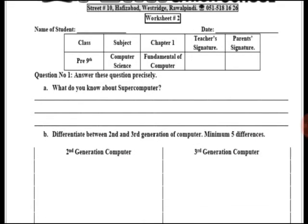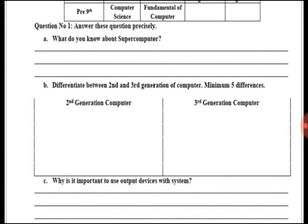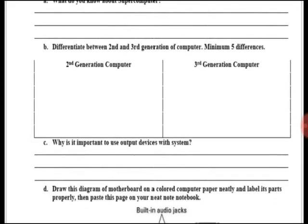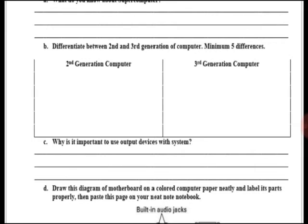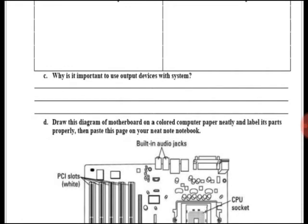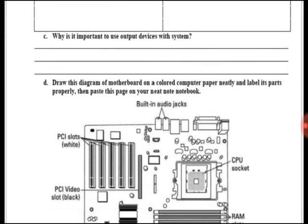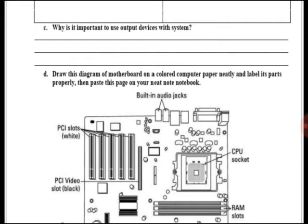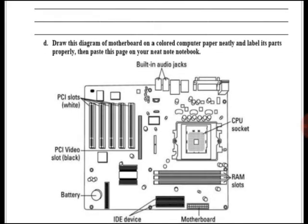Worksheet number two - you have to answer these questions precisely. What do you know about supercomputer? Write a note on supercomputer. You have to differentiate between second and third generation of computer with minimum five differences. Part C is why is it important to use output devices with your system? What will happen if you do not use output devices? Why are output devices important?